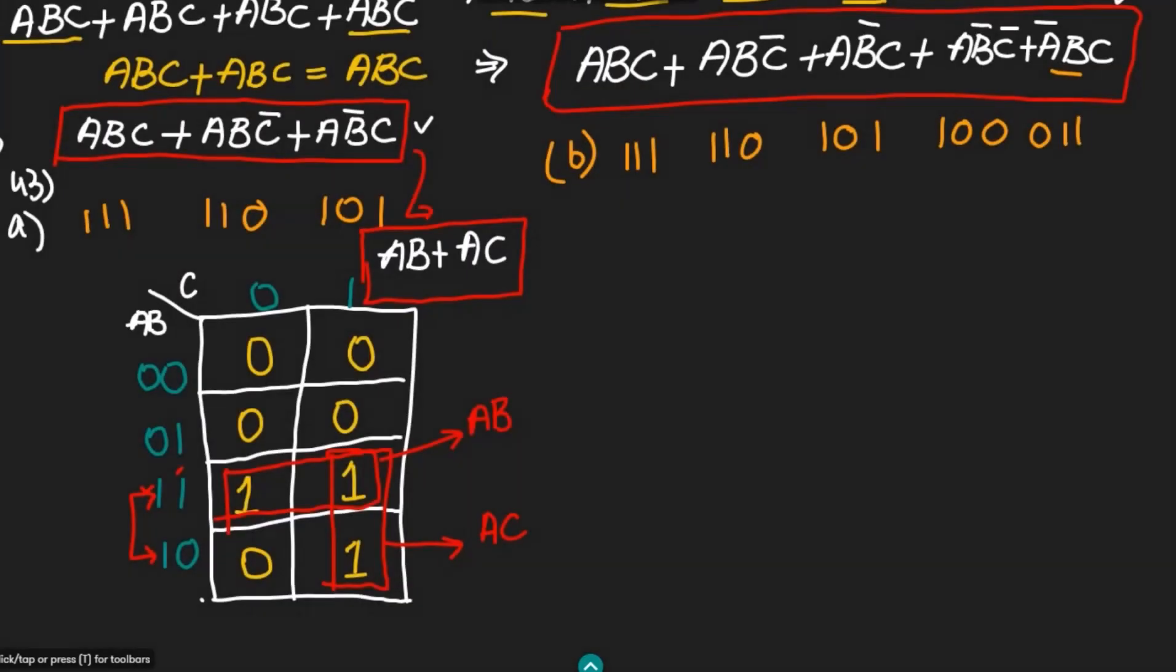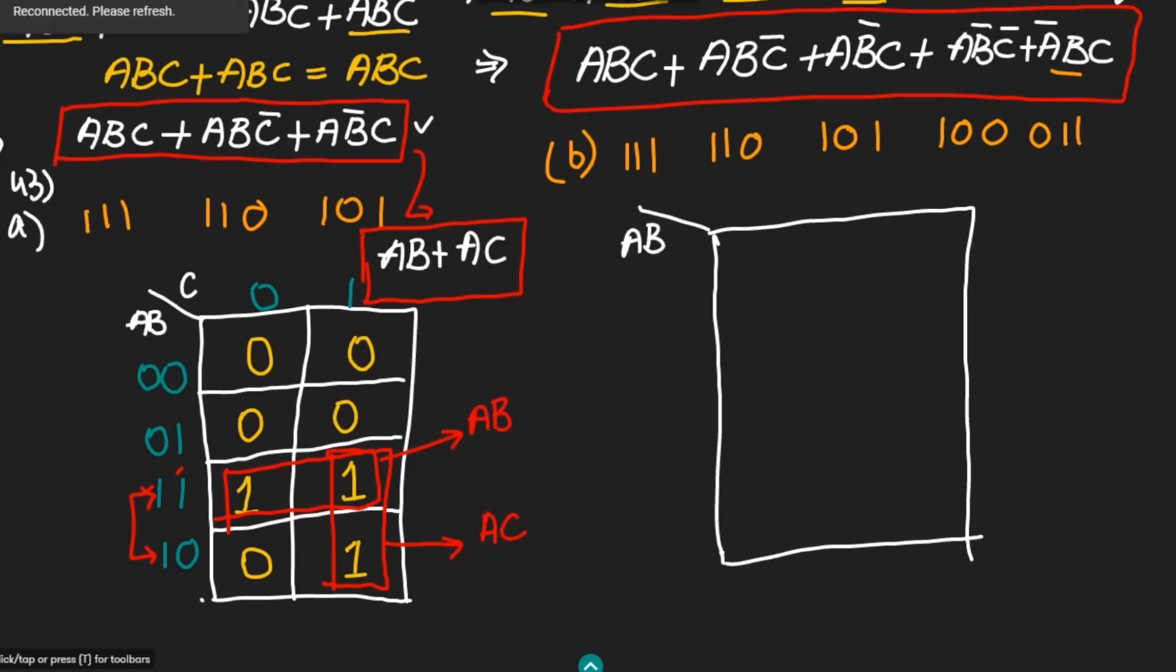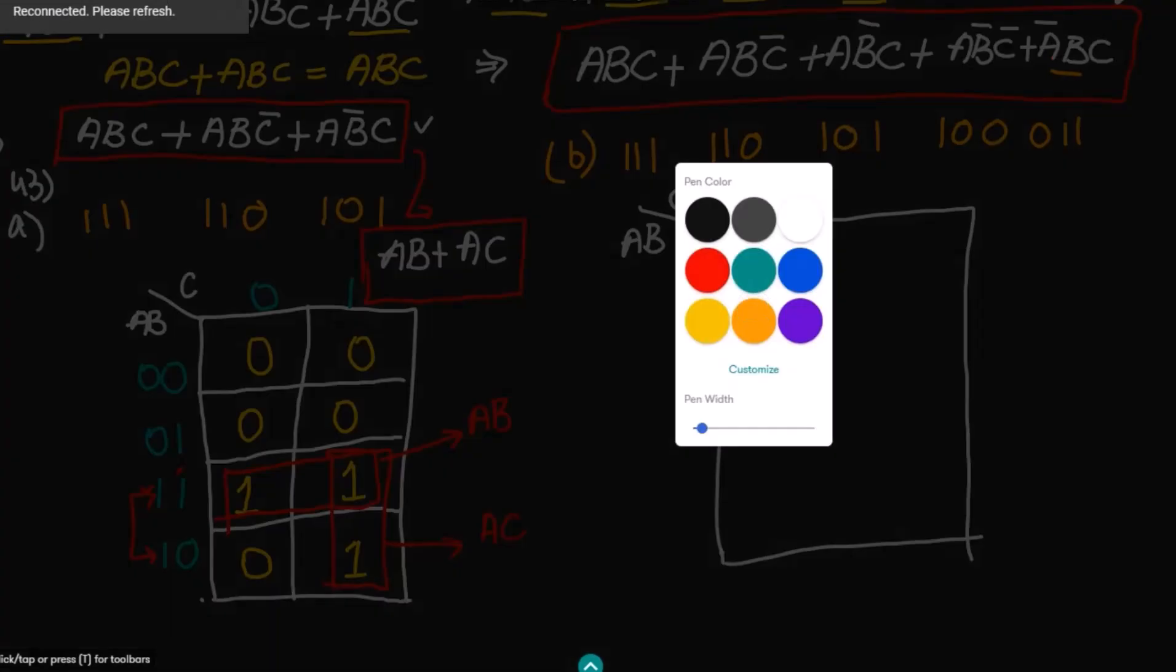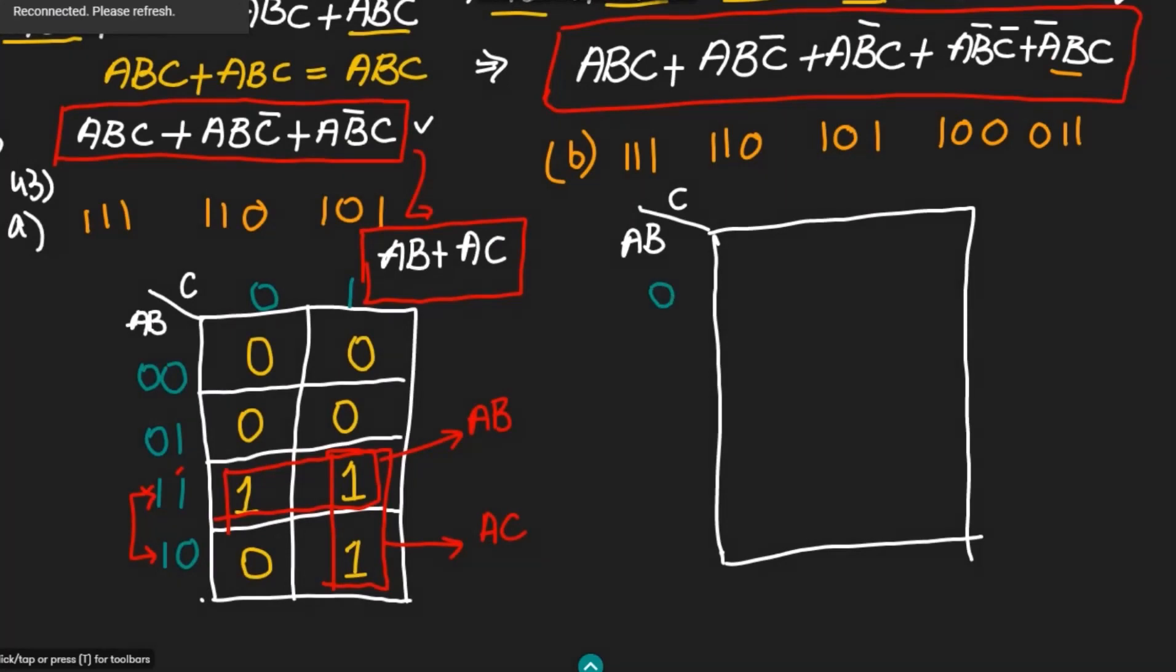After it, I have to draw the Karnaugh map here as well for the three variables. This is a Karnaugh map. Let me write the variables: AB and C here. The bits combinations are 00, 01, 11, 10, and 01 here. Let me complete this Karnaugh map.